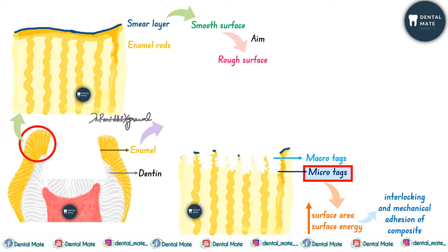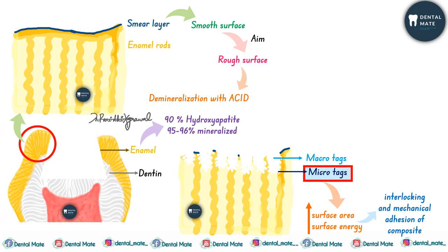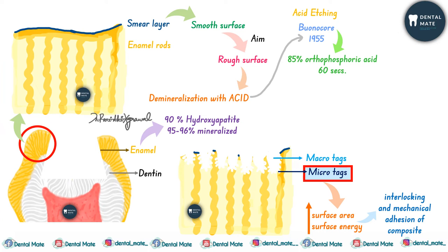To create a rough surface, we must consider that enamel contains 90 percent hydroxyapatite crystals and is 95 to 96 percent mineralized. Demineralization with acid can create resin tags. In 1955, Bonocore introduced acid etching with 85 percent orthophosphoric acid for 60 seconds. Silverstone later observed that 30 to 40 percent phosphoric acid used for 15 to 30 seconds provided similar results.